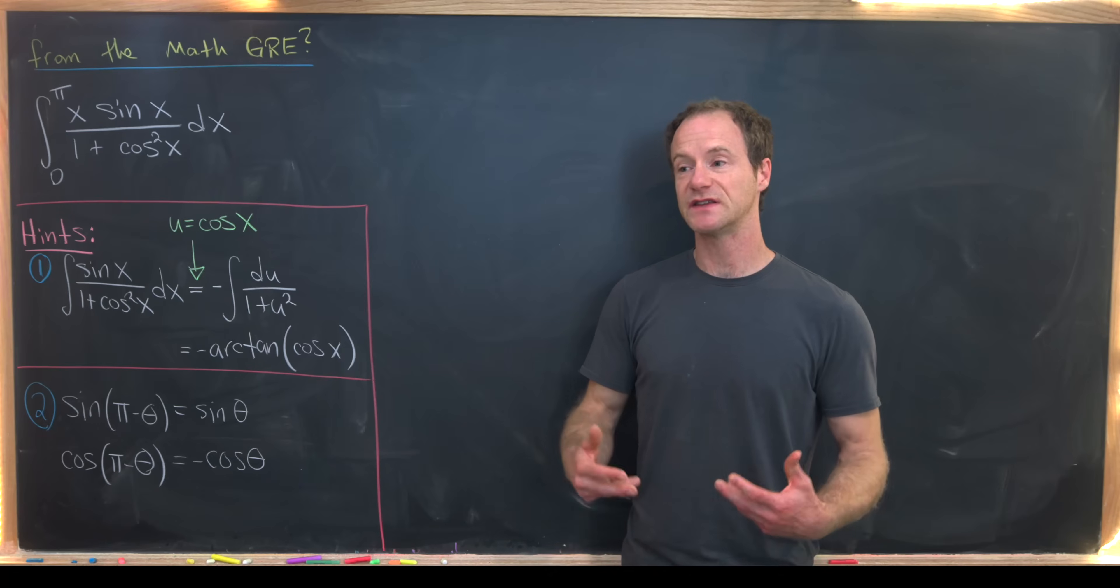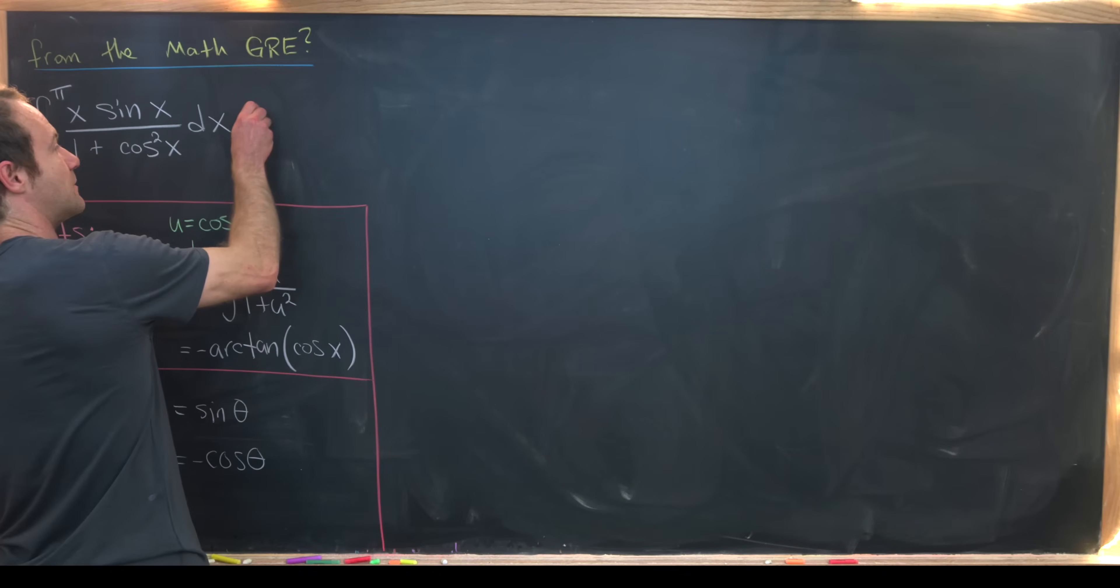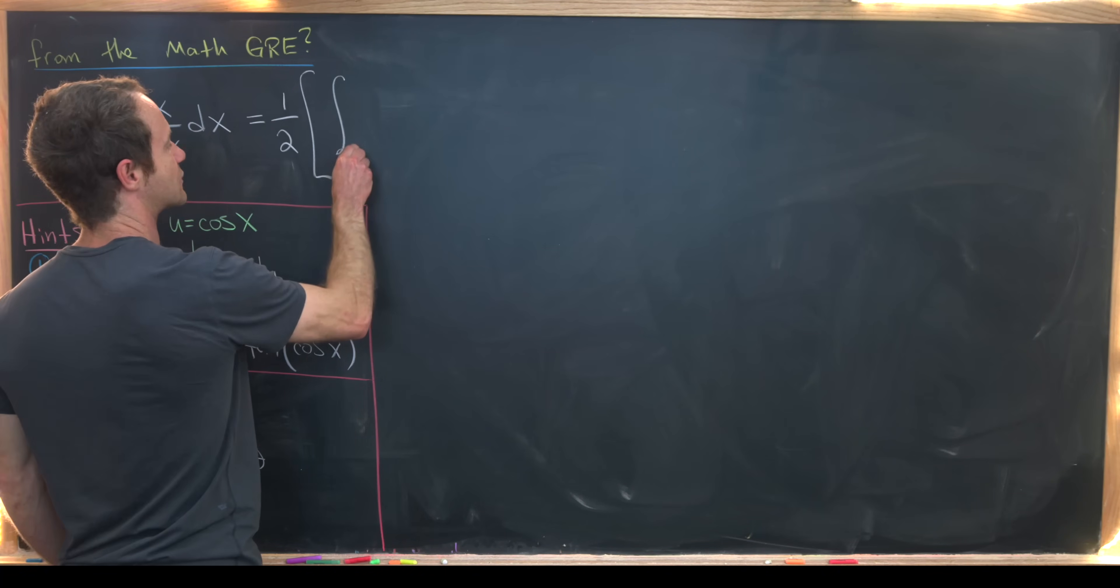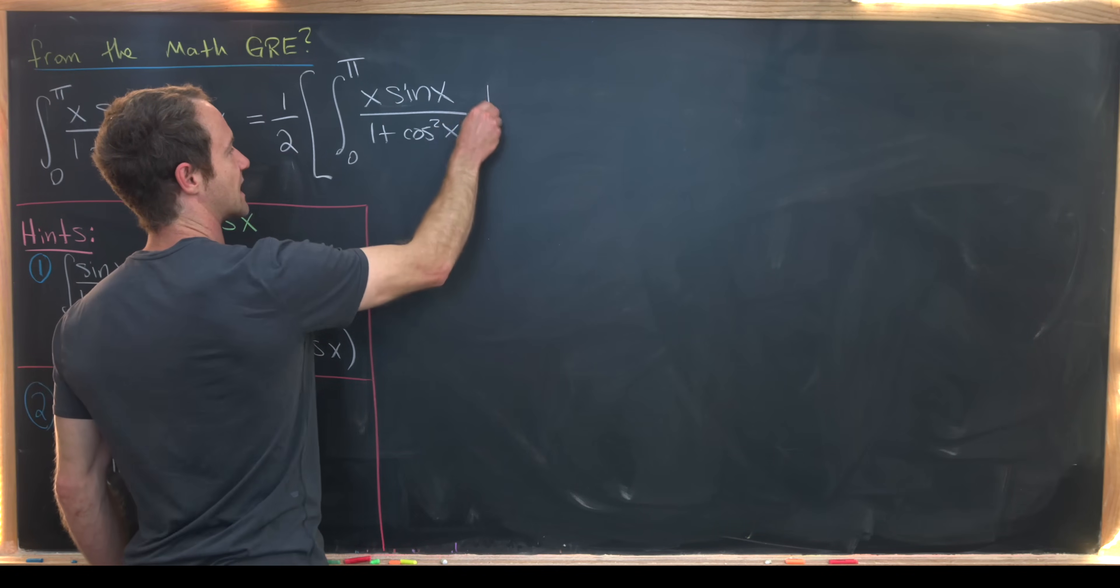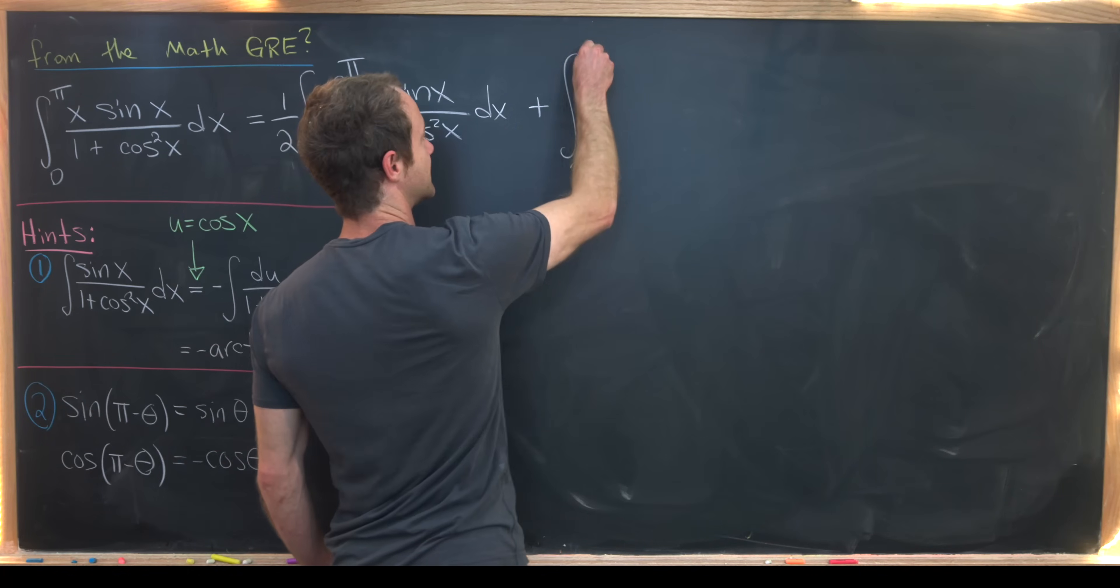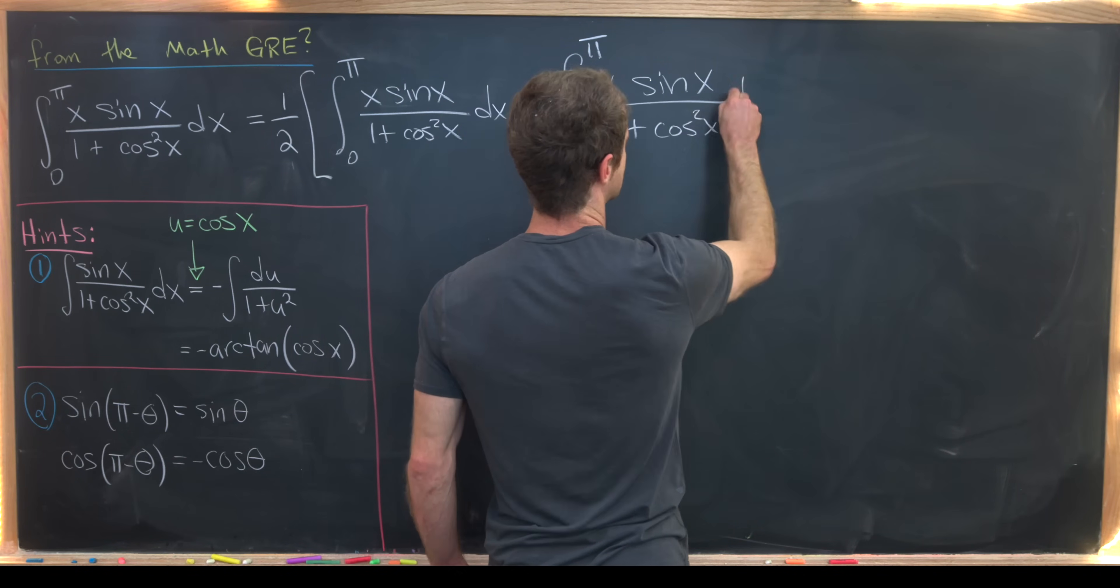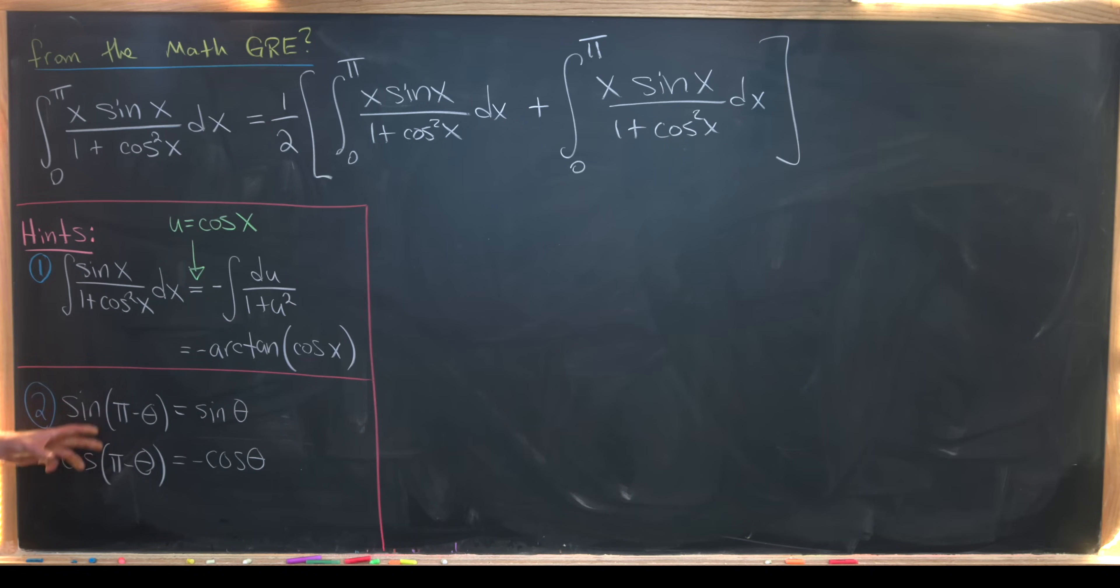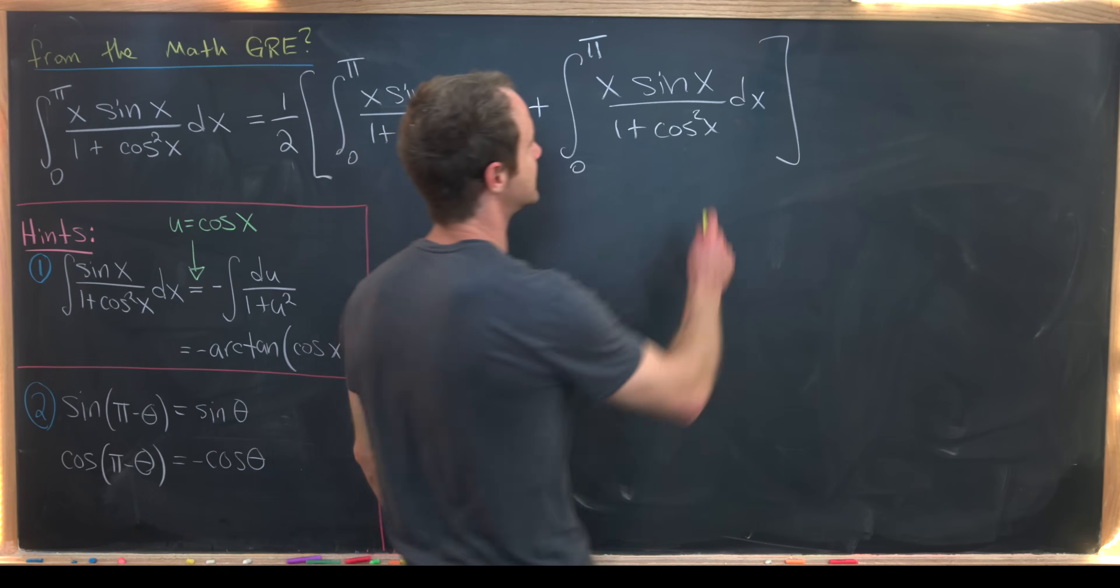I'm going to present this solution in a pretty elegant way. This is maybe like a second draft type solution. I'm going to start off by rewriting this as one half and then this integral plus itself. So we've got the integral from zero to pi of x times sine of x over one plus cosine squared of x dx, plus the same thing. That's definitely allowed because one plus one is two times a half is clearly one. Now we want to use a substitution that will take advantage of this second hint. And we'll do that in this second integral.